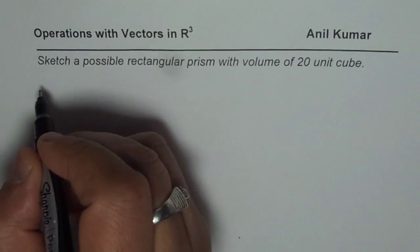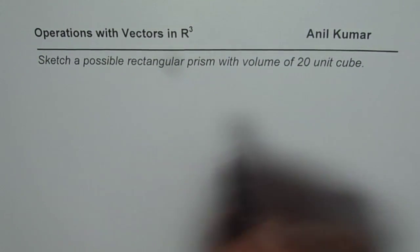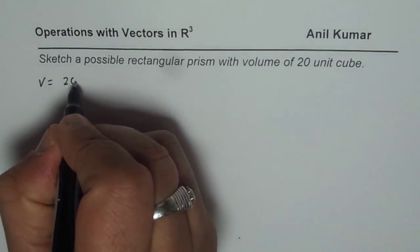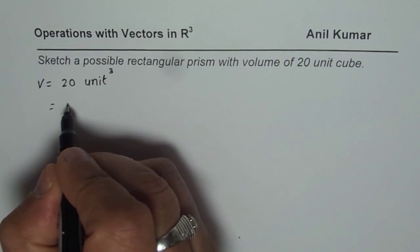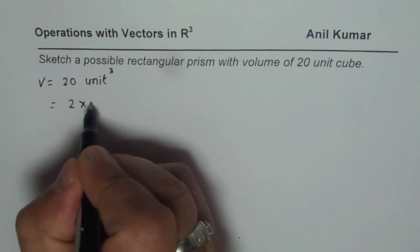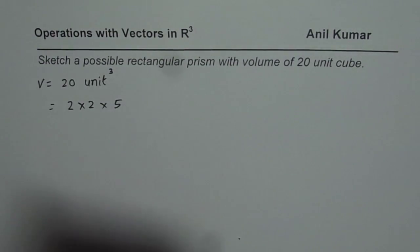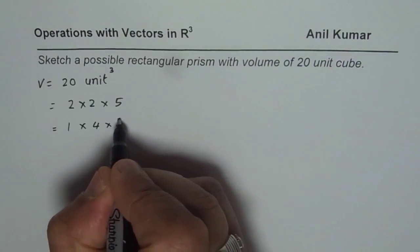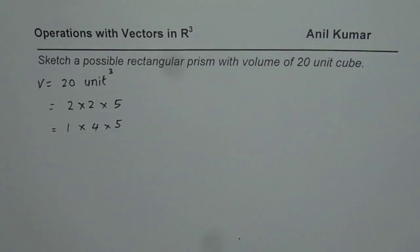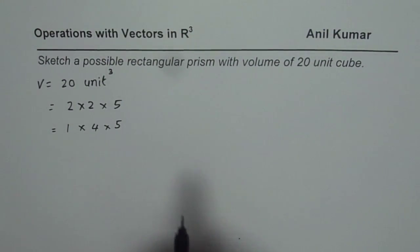When we say rectangular prism with volume of 20 unit cubes, we could have length, width, and height in many different ways. We could get 20 as 2 times 2 times 5, which gives 20 unit cubes. We could also get 20 unit cubes as 1 times 4 times 5, and there are many other combinations like 1 times 10 times 2, and so on.